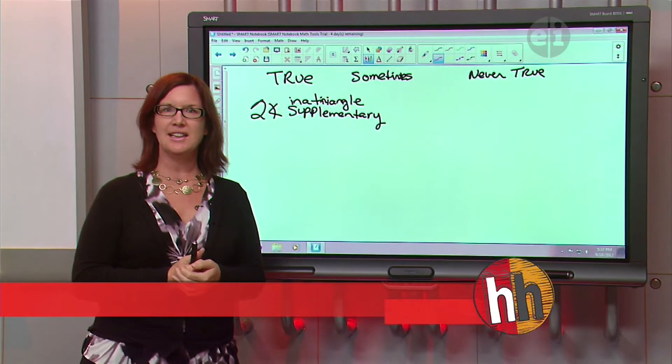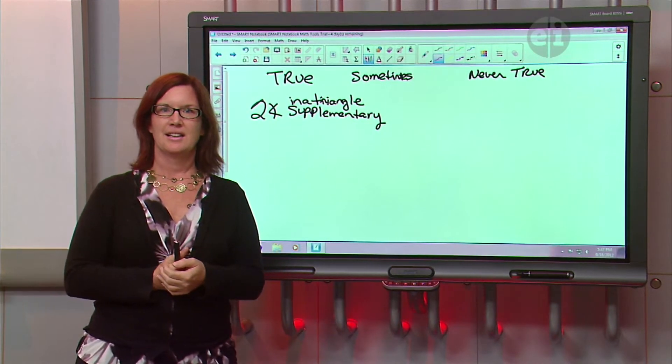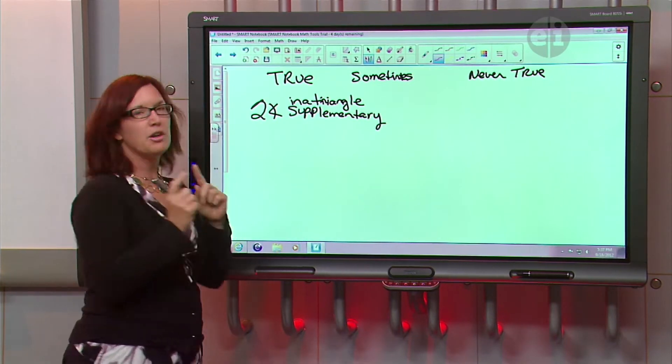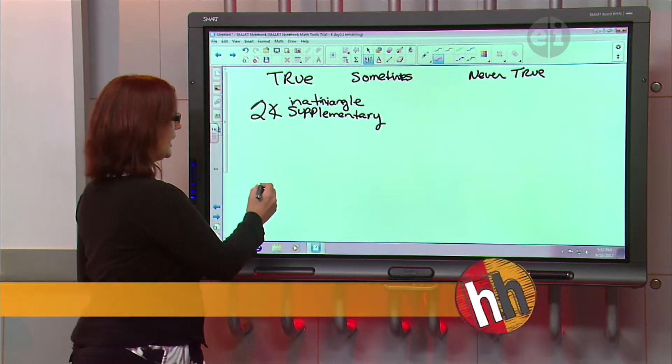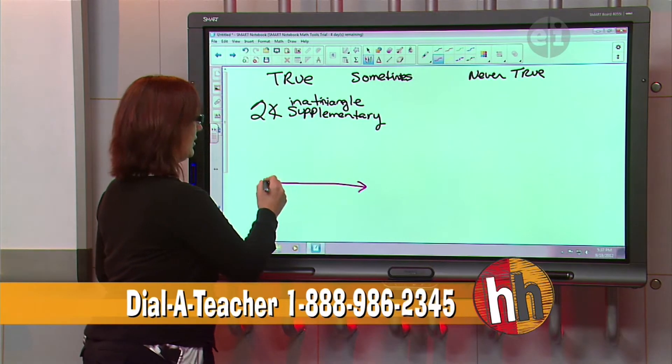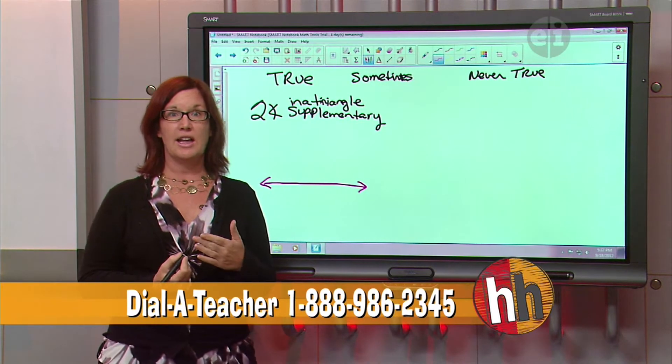Supplementary. Do you know what supplementary angles are? It's a 180 degree angle. Well, it's not quite a 180 degree angle. Because a 180 degree angle is a straight line. Okay? So that's a 180 degree angle.